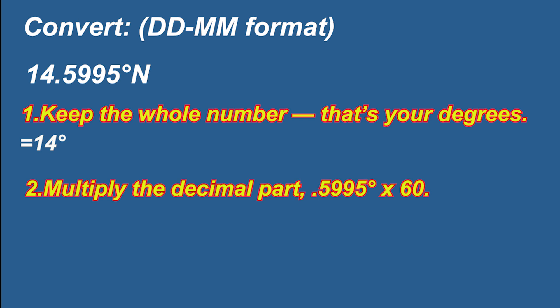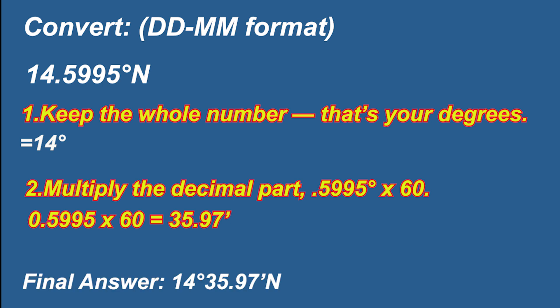Step two: Multiply the decimal part 0.5995 by 60. 0.5995 times 60 equals 35.97 minutes. So the final answer is 14 degrees 35.97 minutes north.